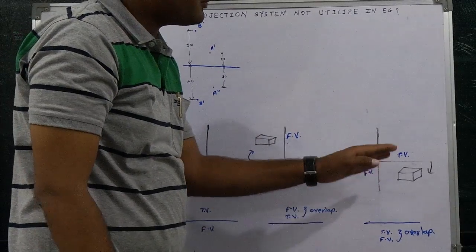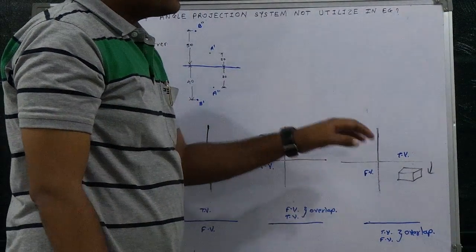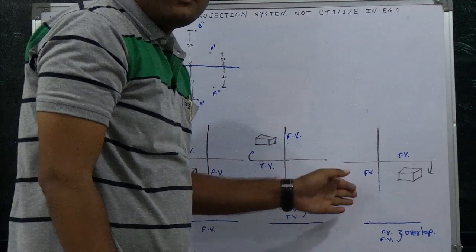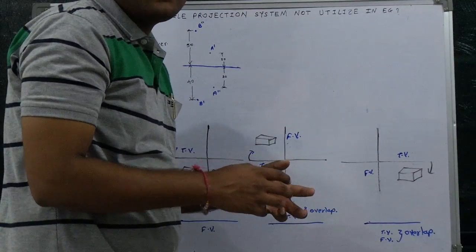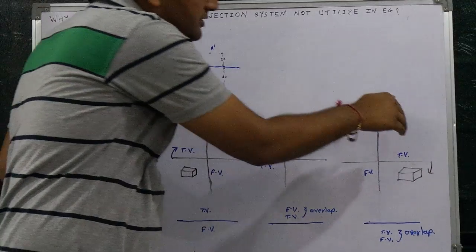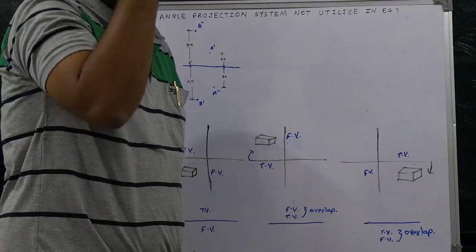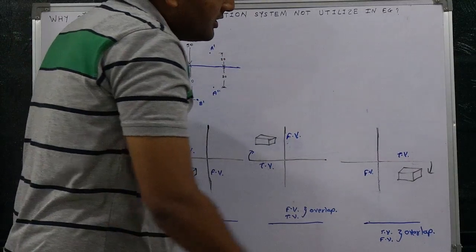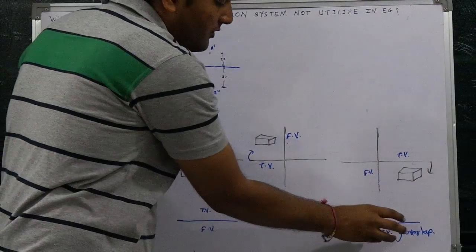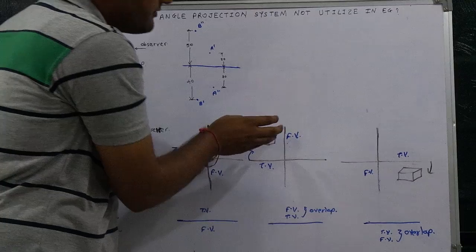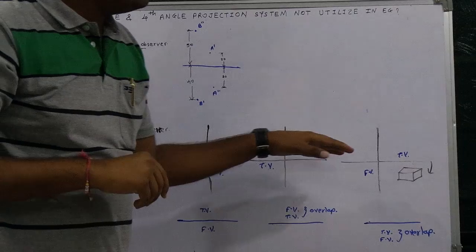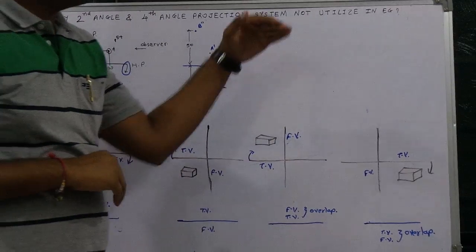In the fourth angle projection system, the product is placed in the fourth quadrant. The top view lies on the horizontal plane and the front view on the vertical plane. But from the rule of projection of a point, we need to turn the horizontal plane downward. As a result, the top view and front view both come to the downward side and overlap. So in the second quadrant both views are above the reference line, and in the fourth quadrant both views are below — overlap occurs in both cases.